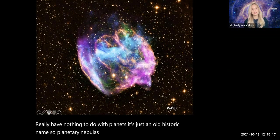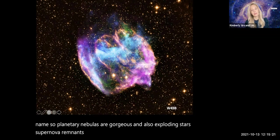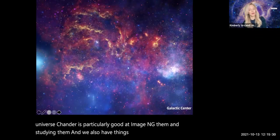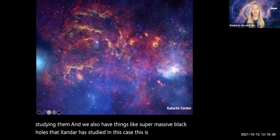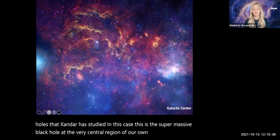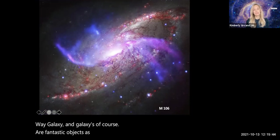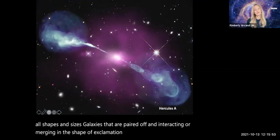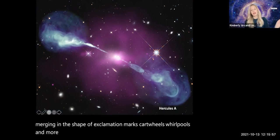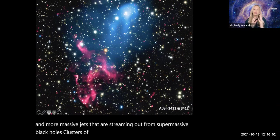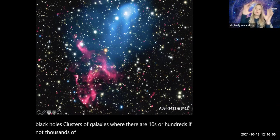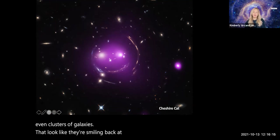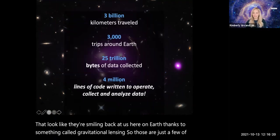Supernova remnants are some of my favorite objects in the entire universe. Chandra is particularly good at imaging them and studying them. We also have things like supermassive black holes that Chandra has studied. In this case, this is the supermassive black hole at the very central region of our own Milky Way galaxy. And galaxies, of course, are fantastic objects as well. Chandra gets to study galaxies of all shapes and sizes, clusters of galaxies, and even clusters of galaxies that look like they're smiling back at us here on Earth thanks to something called gravitational lensing.